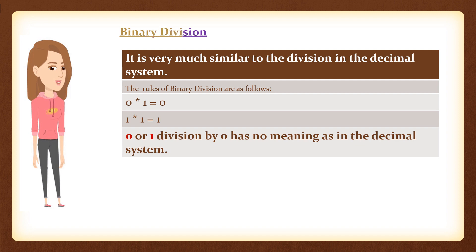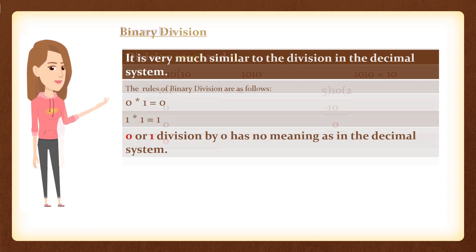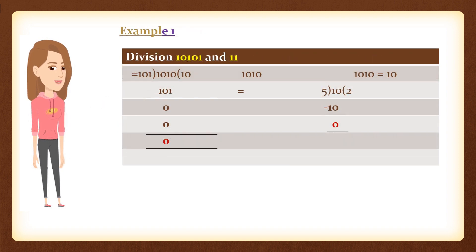Binary division. It is very much similar to the division in the decimal system. Example 1: Division of 10101 by 11.